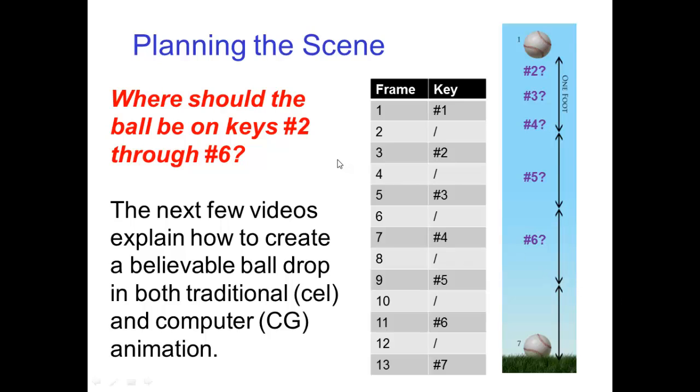Now the question is, where should the ball be on keys number two through number six? In other words, what are the spacings for falling motion? The next few videos will explain how to create a believable ball drop in both traditional and computer animation.